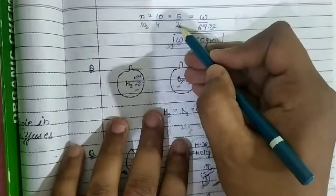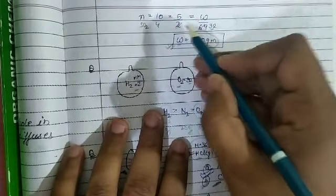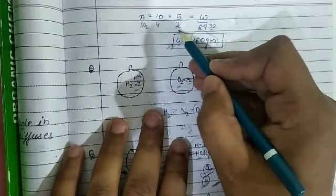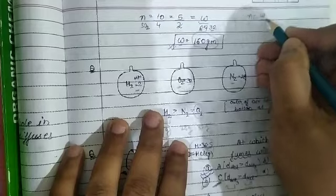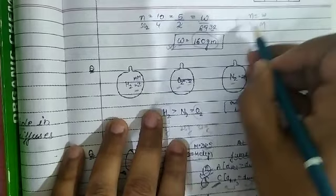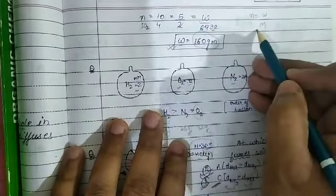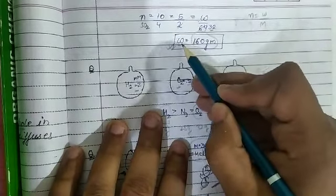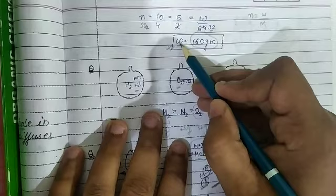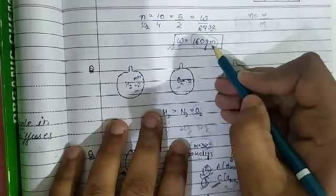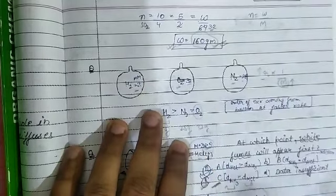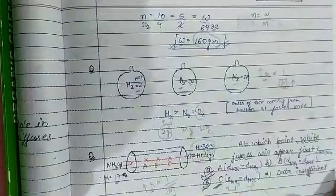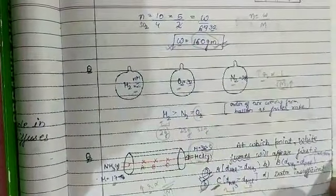So n is 5 by 2. Since number of moles equals given mass by molar mass, and molar mass of SO₂ is 64, the weight of SO₂ comes out to 160 grams.